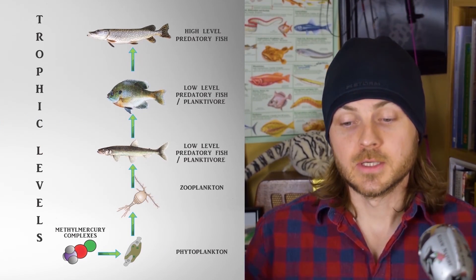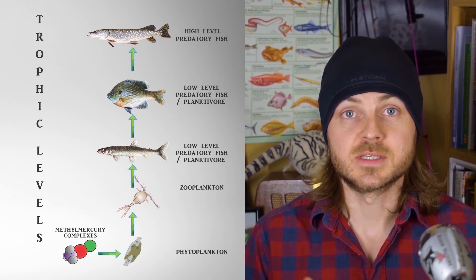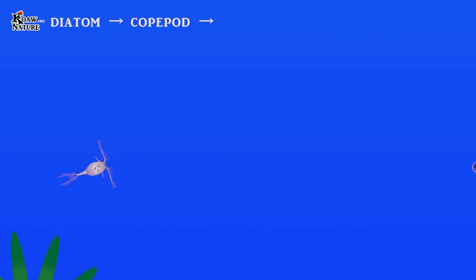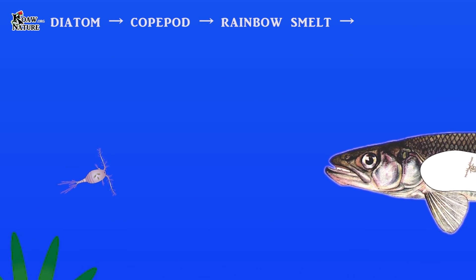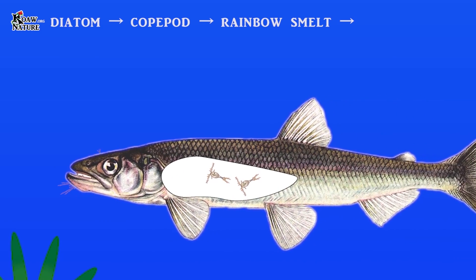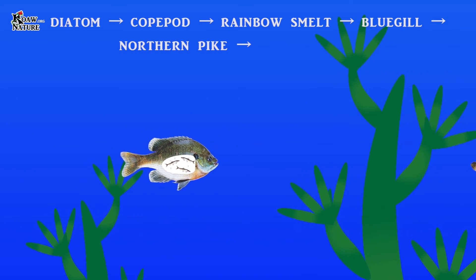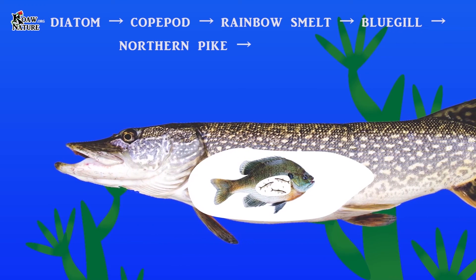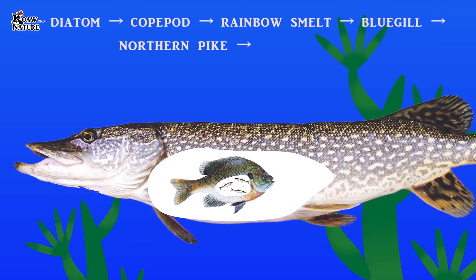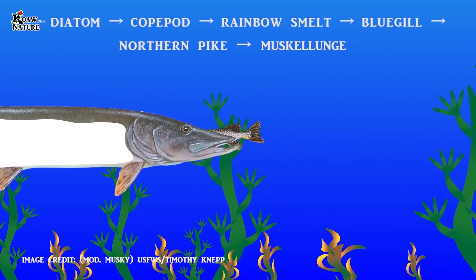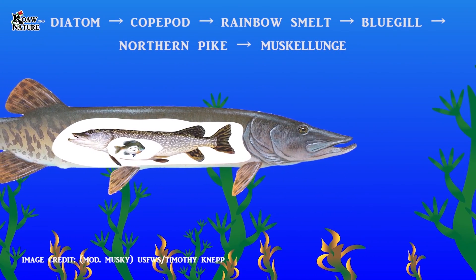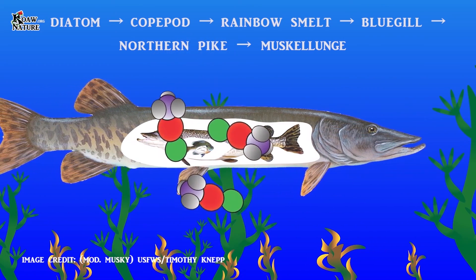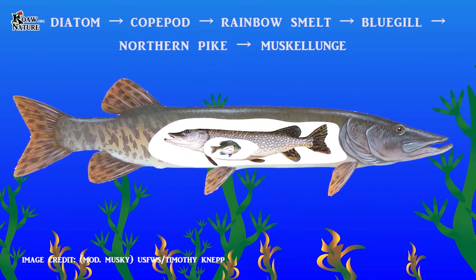Let's say we add another planktivore to this system — a rainbow smelt. A copepod that absorbed a bunch of diatoms is then consumed by a juvenile rainbow smelt, that is then consumed by a bluegill, that is then consumed by the northern pike. There's more opportunity for methylmercury absorption at higher trophic levels. And even imagine another top predator, the muskellunge, coming and eating that pike — which has probably eaten a lot of bluegills with retained methylmercury. You get it, right?